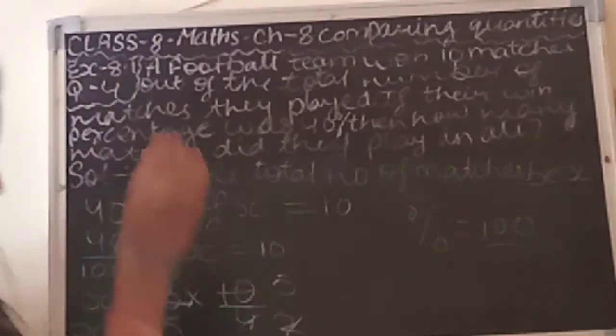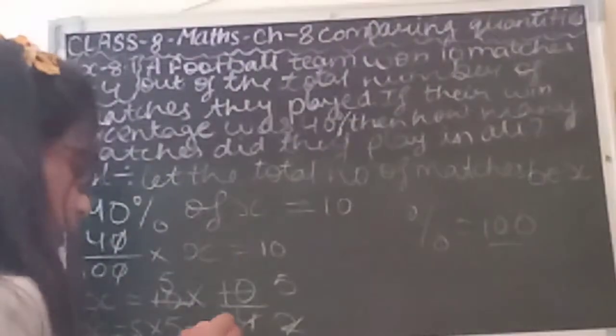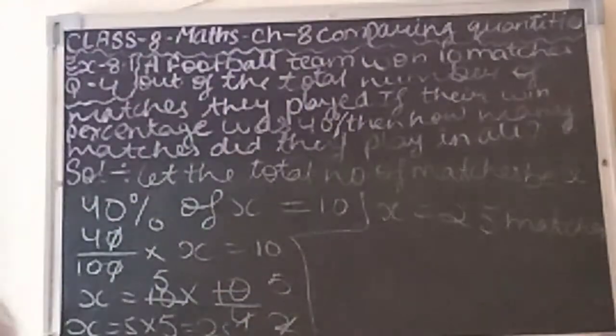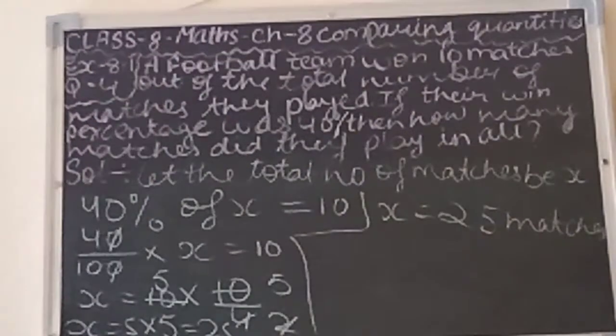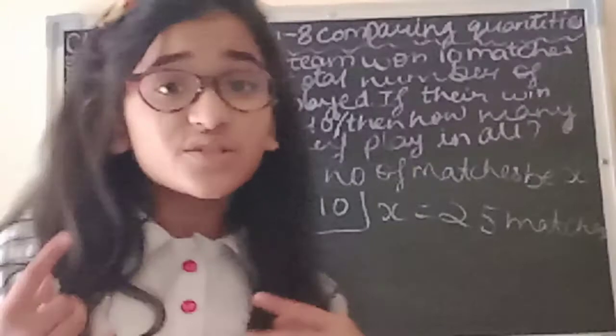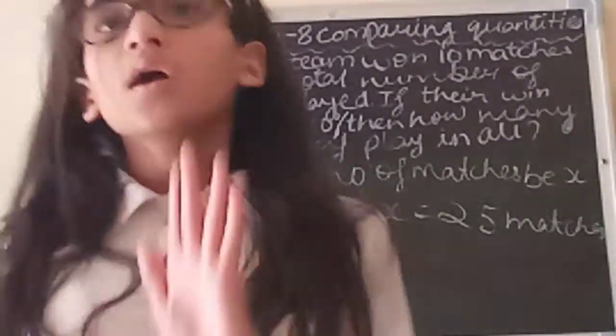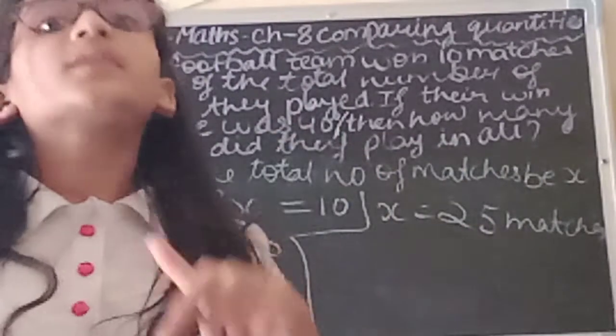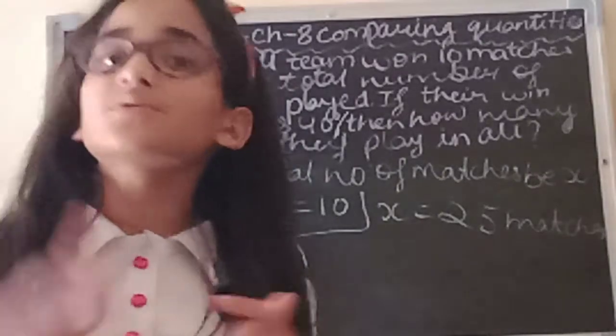Now we will solve. x is equals to 5 into 5. 5 into 5 is equals to 25. So x is equals to 25 matches. Total matches are 25 matches.